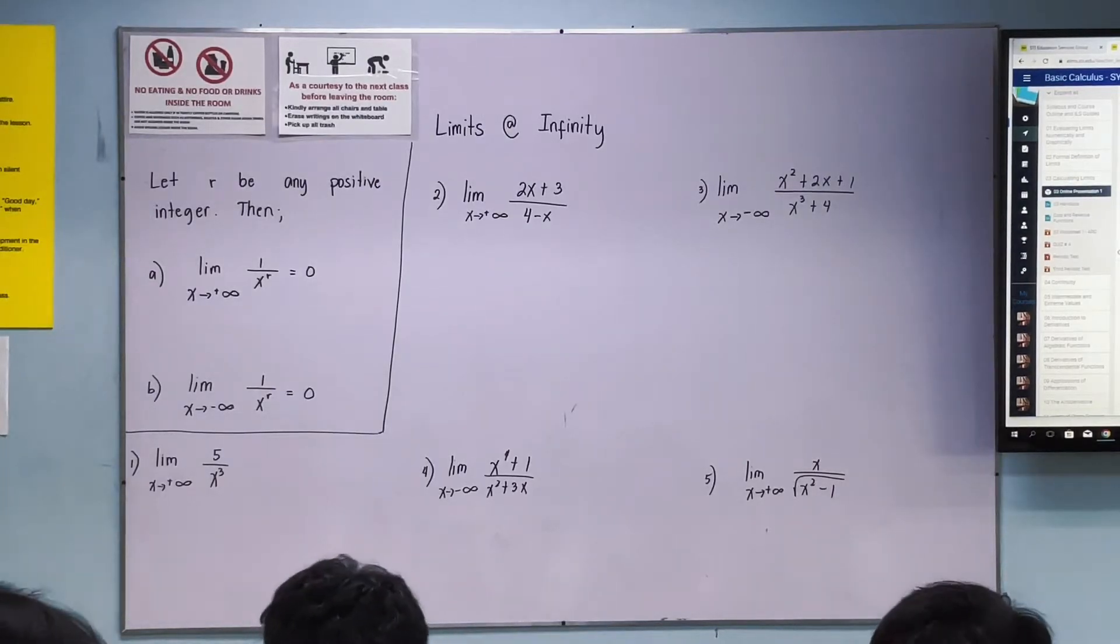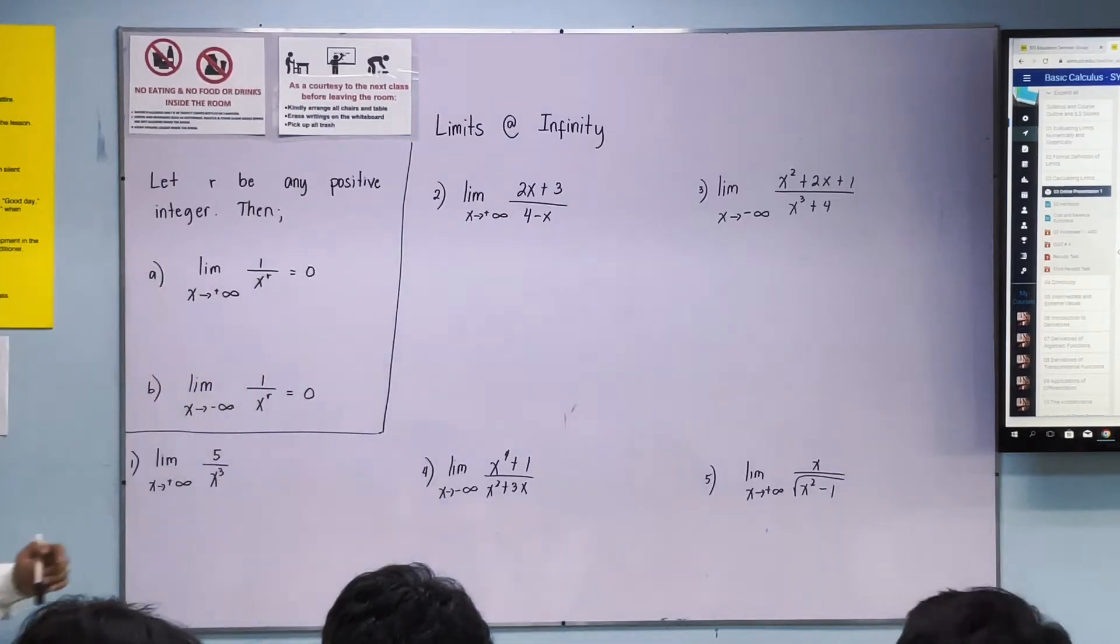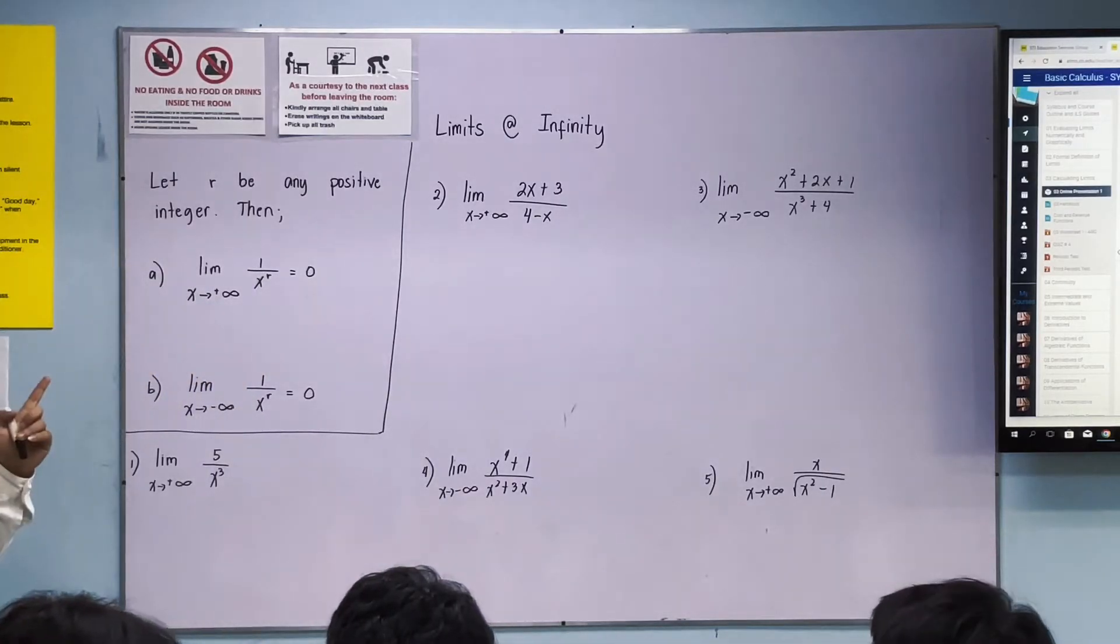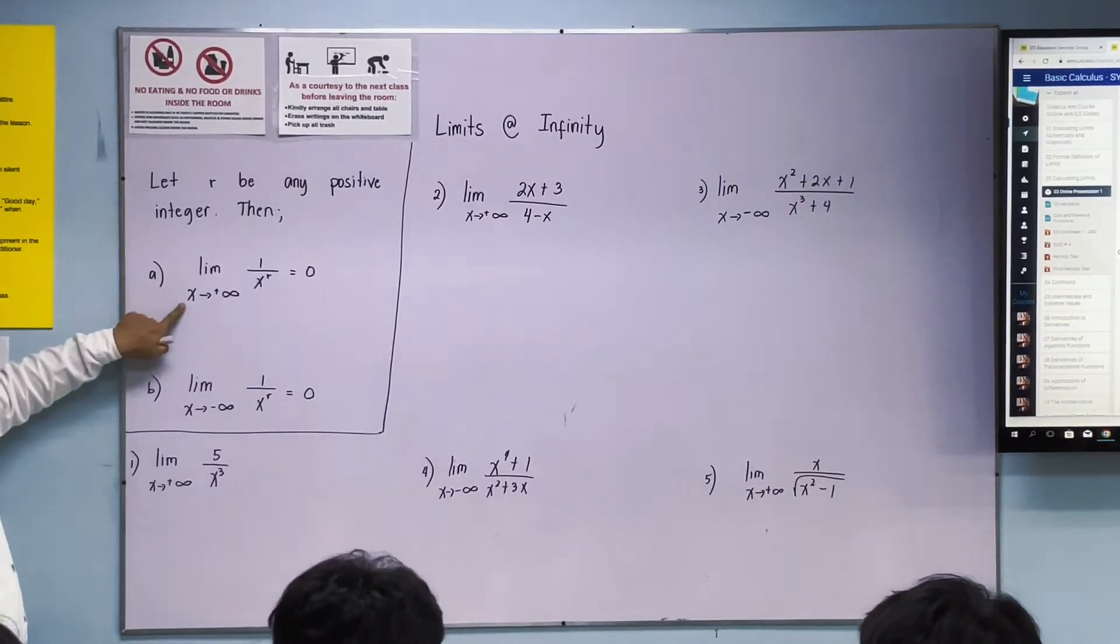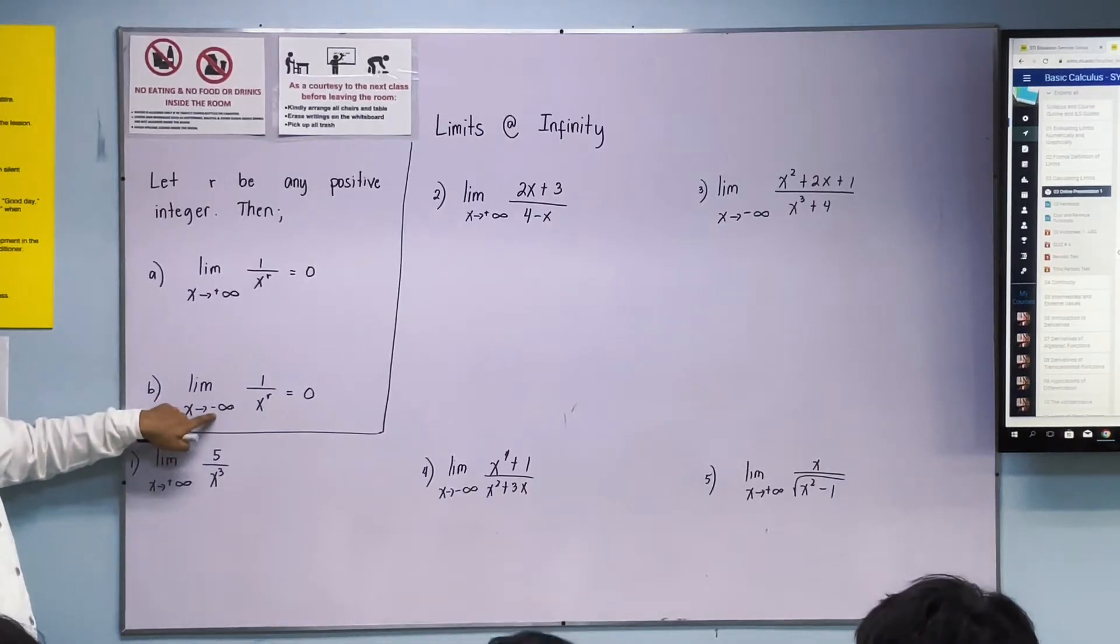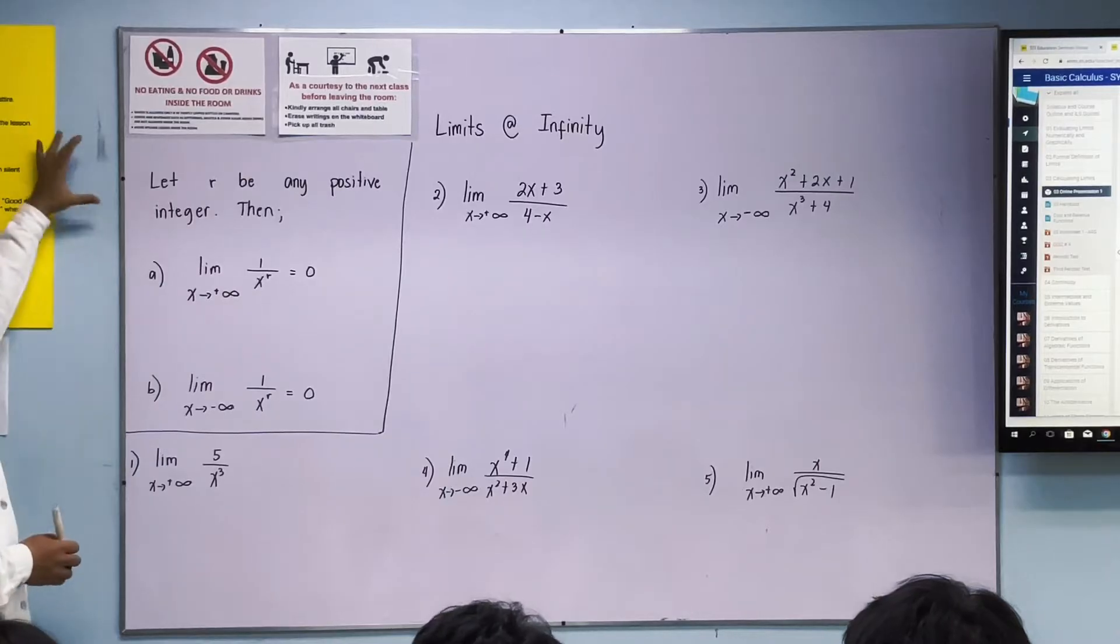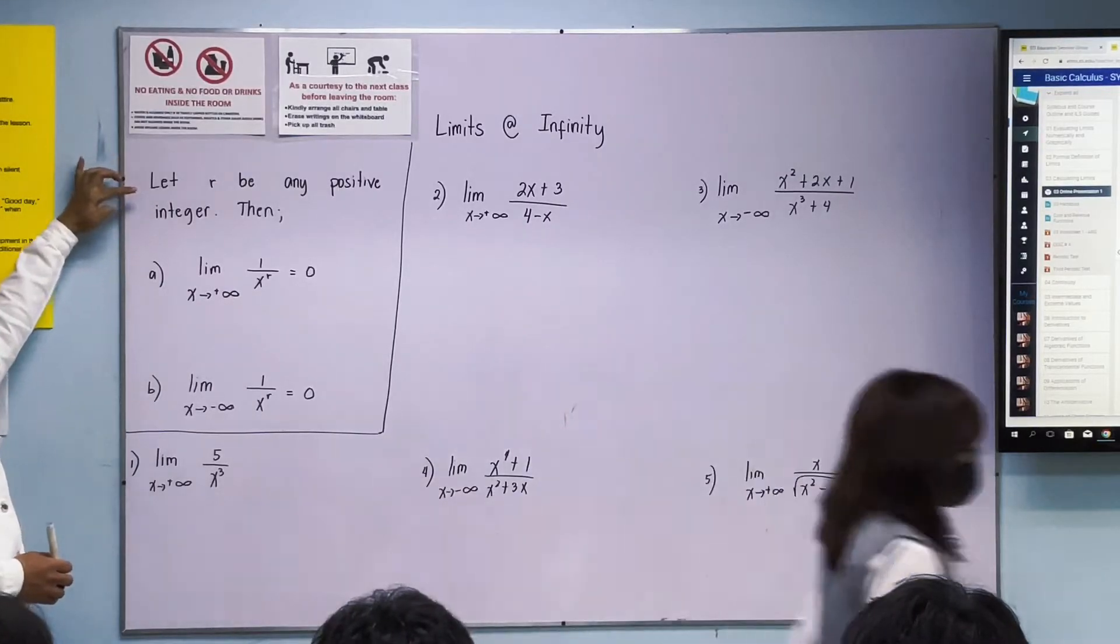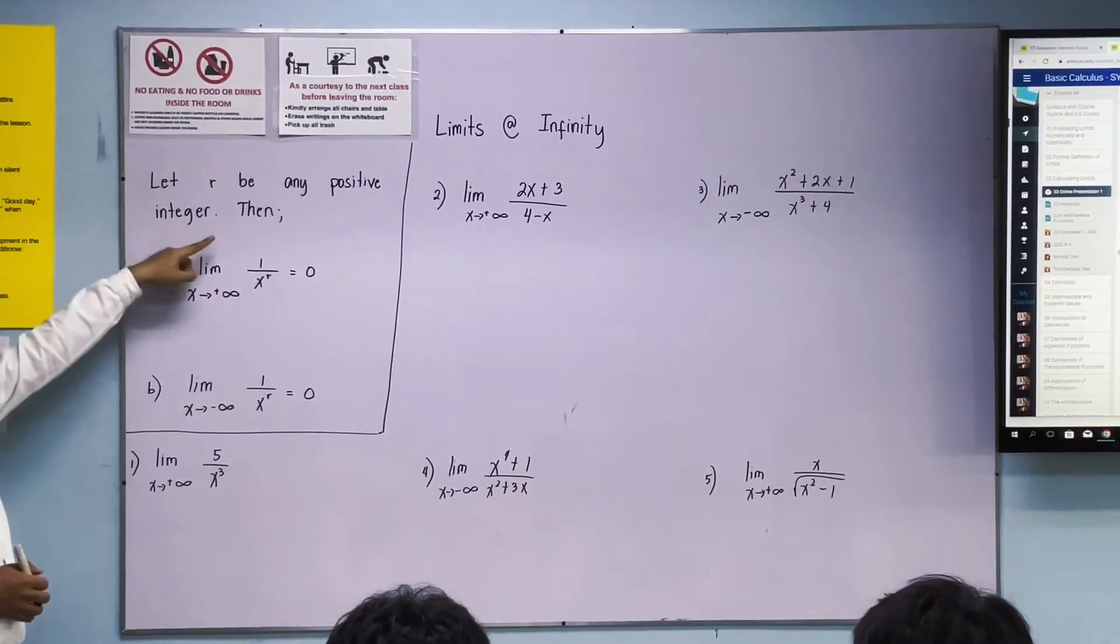Our next topic will be limits at infinity. Previously, we were approaching zero from the left or from the right. What if we're approaching to positive infinity and negative infinity? So let R be any positive integer. Counting numbers.